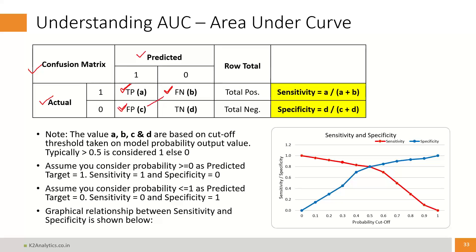True Negative: someone is negative (non-responder) and the test also says they don't have it — a correct prediction. The correct predictions are True Positive and True Negative; the wrong predictions are False Positive and False Negative. Sum of wrong predictions divided by total observations is error rate; sum of correct predictions divided by total is accuracy.